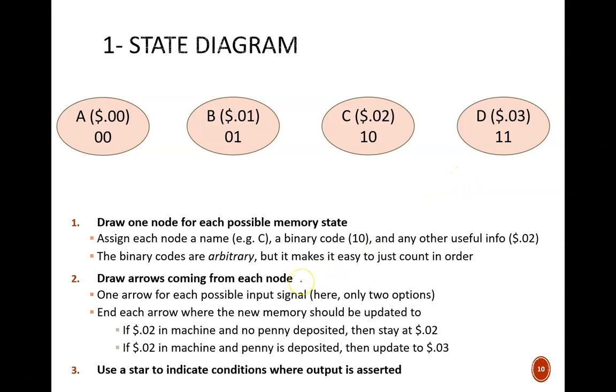With the nodes in place, we now draw arrows. For this problem, there will be two arrows leaving each node. The first set of arrows are the cases when a penny is added. If the machine has 2 cents and a penny is added, then it should update to 3 cents. If the machine has 3 cents and a penny is added, then it should update to 0 cents to start the next purchase. The second set of arrows are the cases when no penny is added. These are simple. They all loop back to the same node, because if no money is added, the total money should not change.